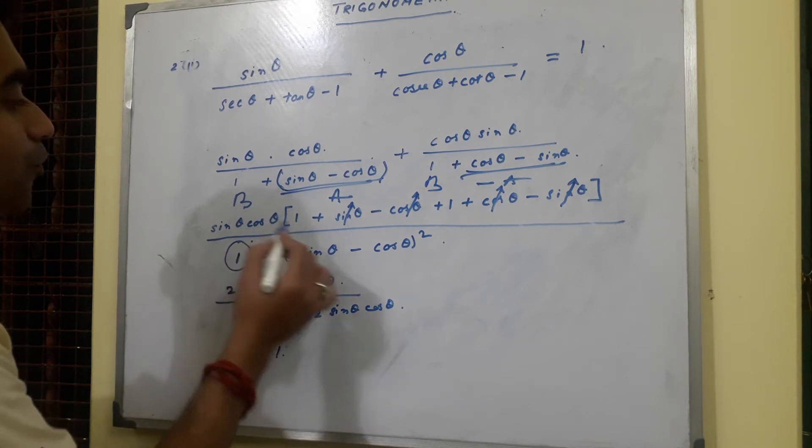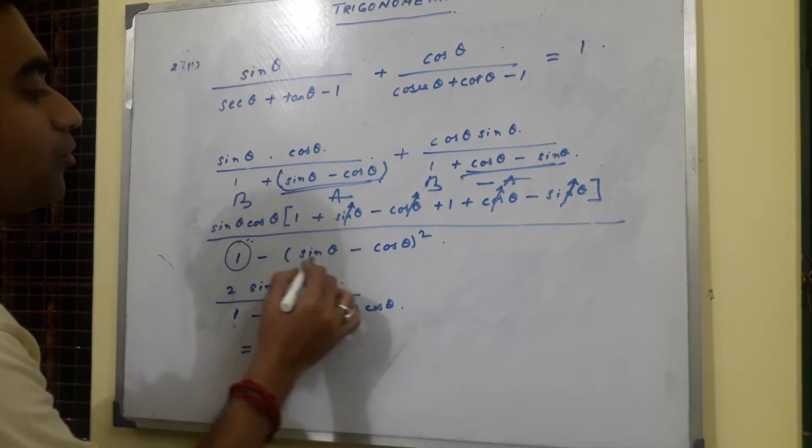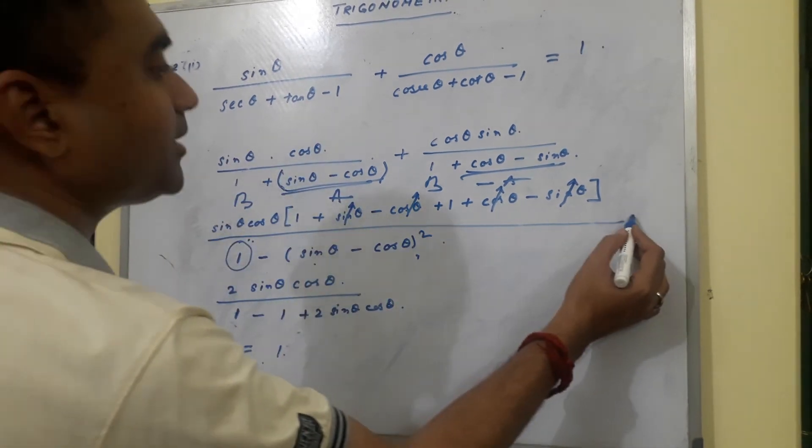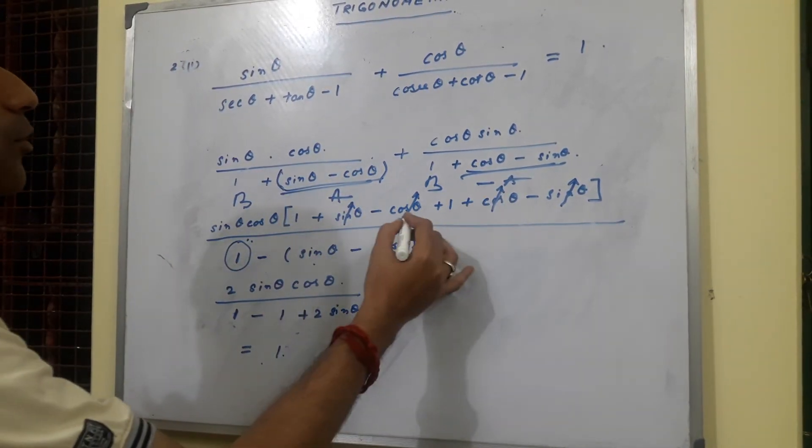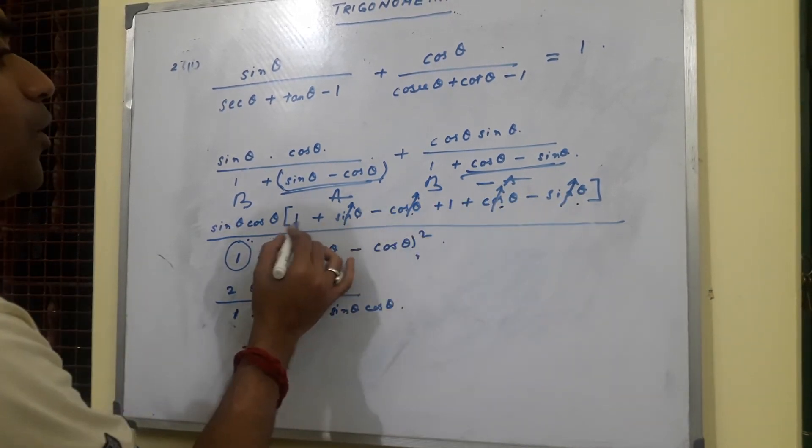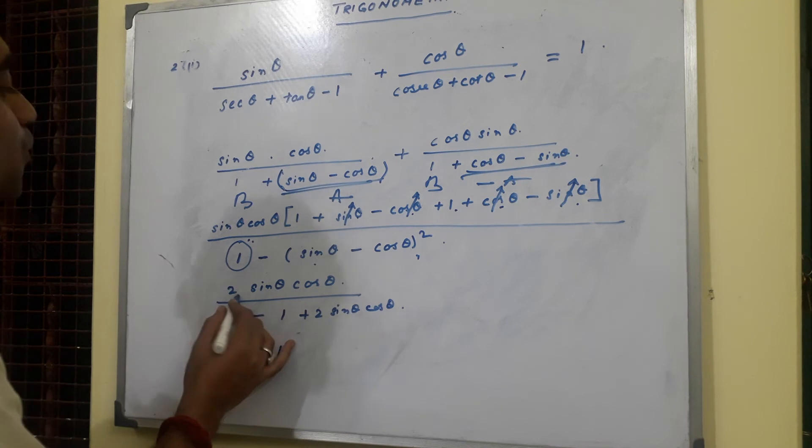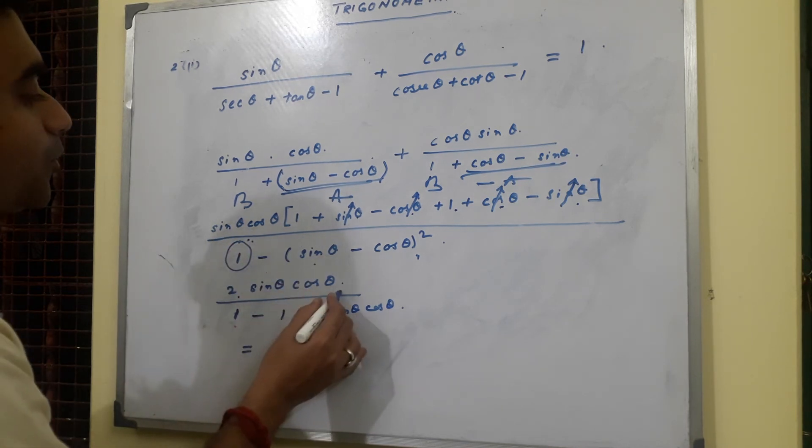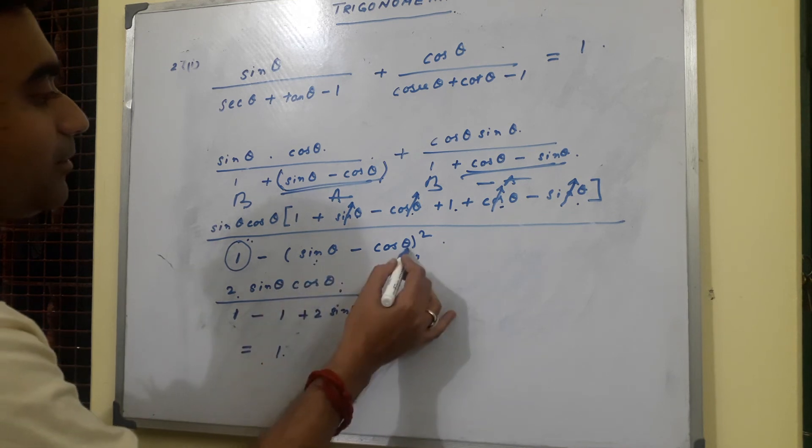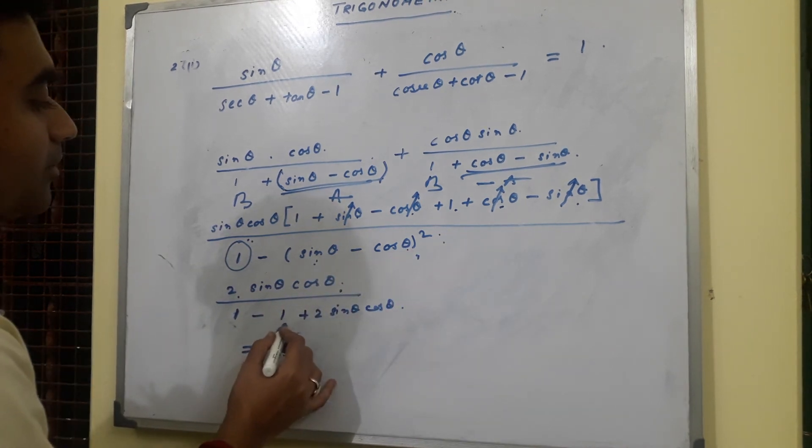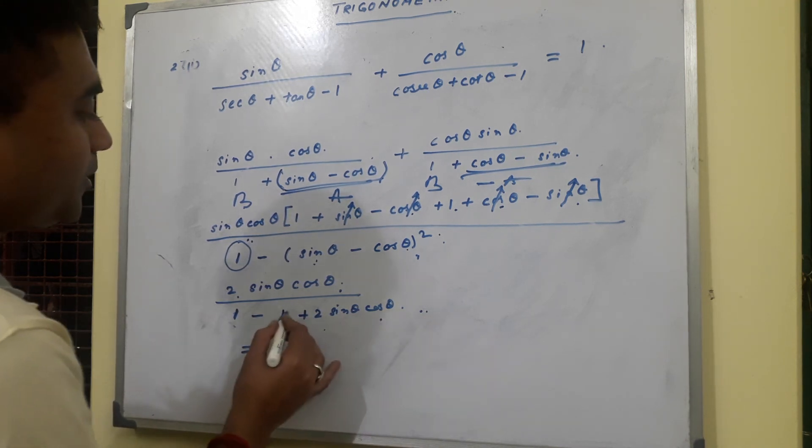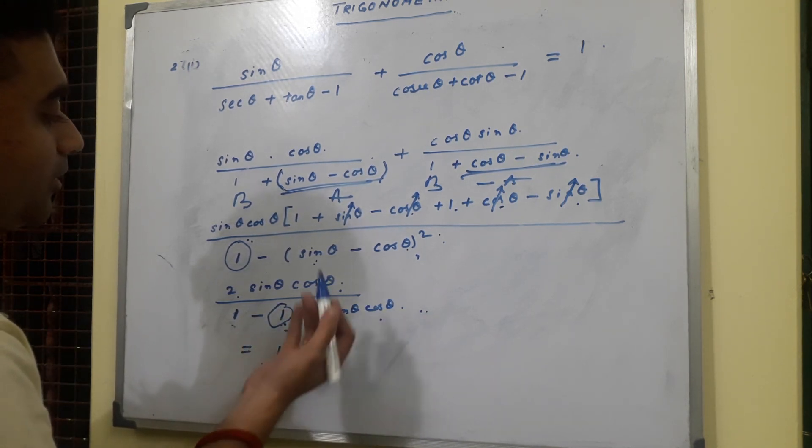This is b square minus a square, and this is sin theta into cos theta, and these things are taken common. These cut out: this cos theta cos theta cuts out, sin theta sin theta cuts out, 1 and 1 adds up to become 2, and this becomes 2 sin theta cos theta. And this if we expand sin theta minus cos theta whole square becomes sin square theta plus cos square theta plus 2 sin theta cos theta. Now sin square theta plus cos square theta is 1, so 1 minus 1 is 0.